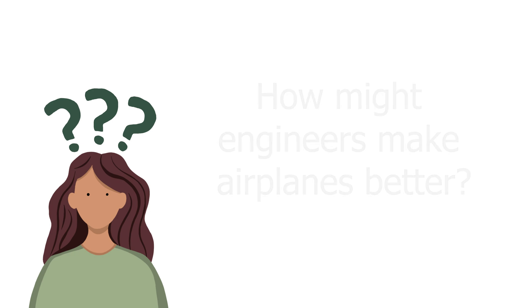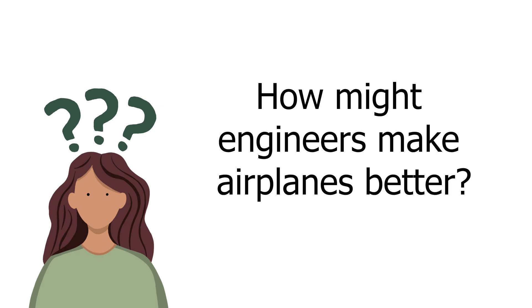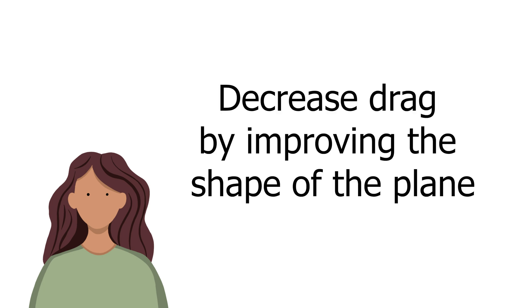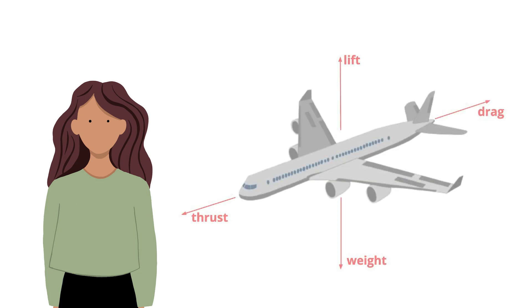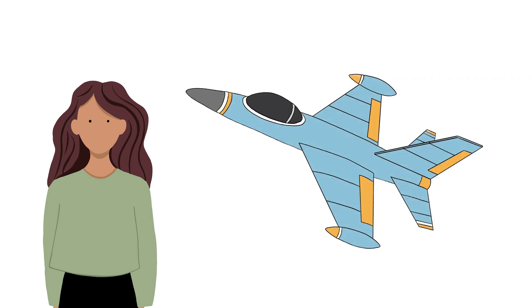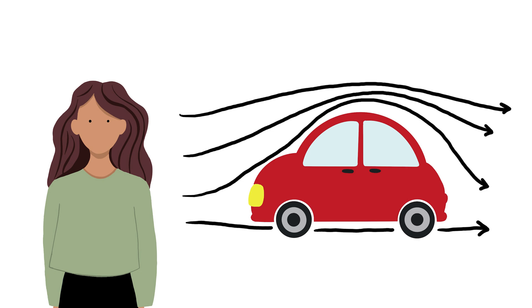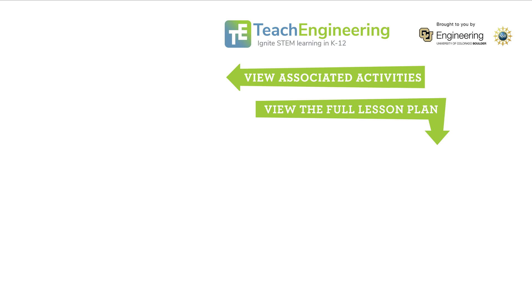Now let me ask you a tricky question: how might engineers make airplanes better? One way engineers can make airplanes better is to decrease the drag by improving the shape of the plane. Engineers of all disciplines use their knowledge of forces to design machines, structures, and appliances. Aeronautical engineers build on their understanding of lift, weight, thrust, and drag to design jets, helicopters, wind turbines, wind servers, and spacecrafts. Other engineers apply the same concepts to objects that travel on land and in water. Engineers design the shape of vehicles to be more aerodynamic to reduce drag force and thus reduce fuel consumption. Check out the lesson on the TEACH Engineering website and then apply what you learned in our associated hands-on activities: Heavy Helicopters, Flow-and-Go Parachute, and You Are Their First Flight.